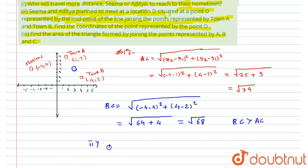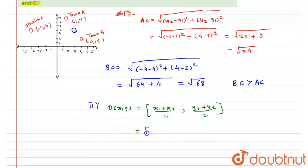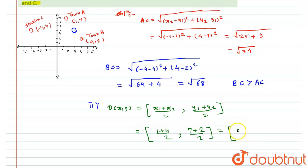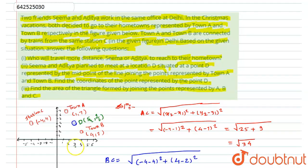For the second question, I'll apply the midpoint formula. The coordinates of D as (x, y) equal (x1 plus x2) divided by 2, and (y1 plus y2) divided by 2. Substituting the values: x = (1 plus 4) divided by 2, y = (7 plus 2) divided by 2, giving coordinates (5/2, 9/2). So Seema and Aditya will meet at point D with coordinates (5/2, 9/2).